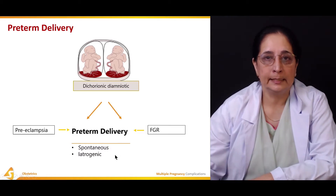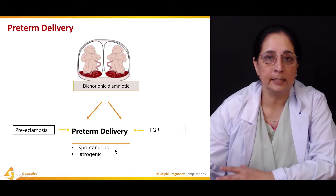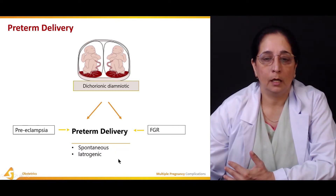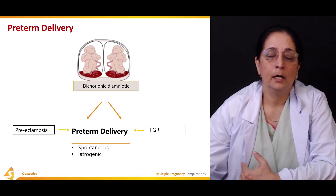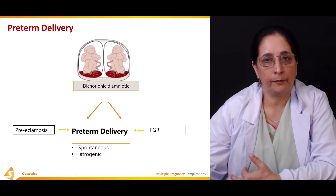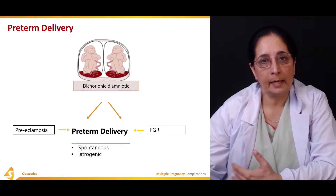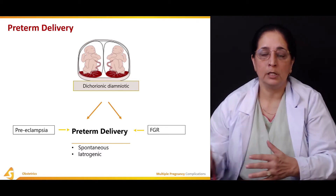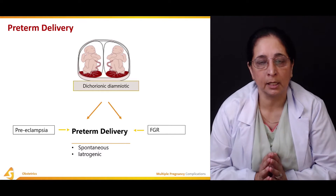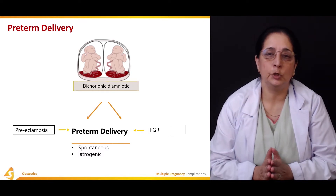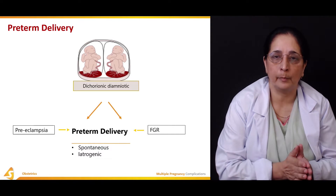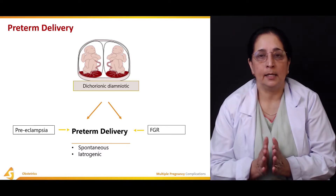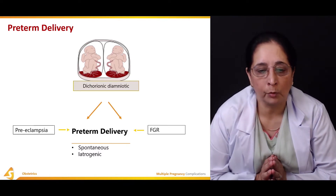Fetal growth restriction is another condition leading to preterm delivery. Preterm deliveries can be spontaneous or self-induced — deliveries are often performed as a management strategy to deliver the babies safely. In dichorionic diamniotic twin pregnancy, the two most common reasons for preterm delivery are preeclampsia and fetal growth restriction.